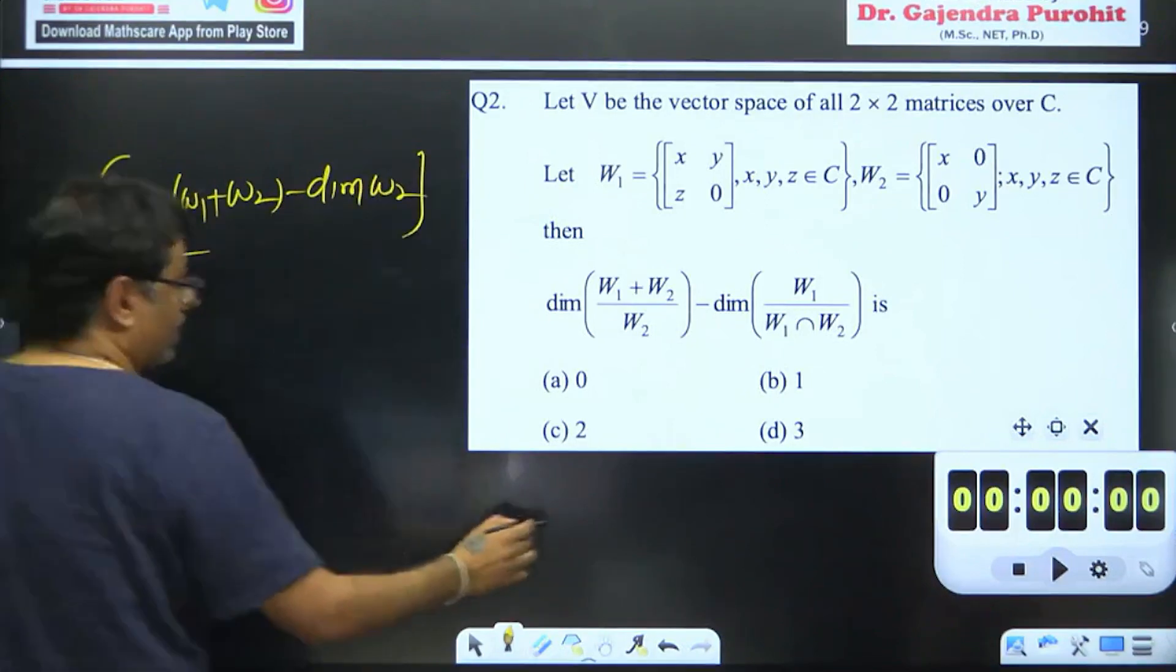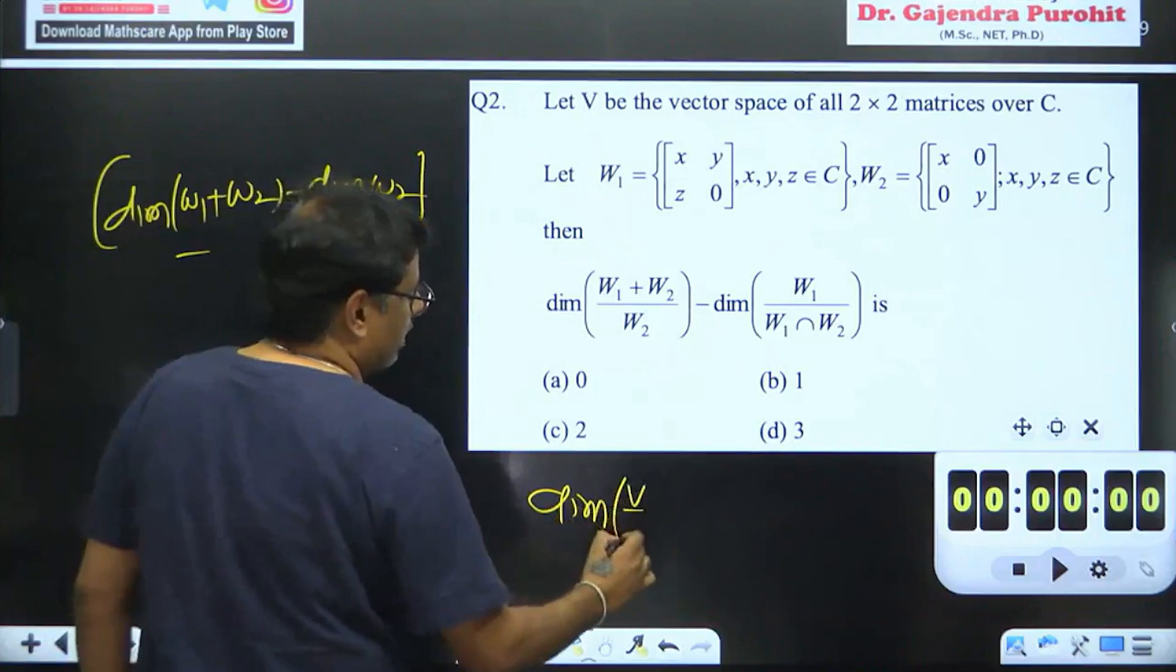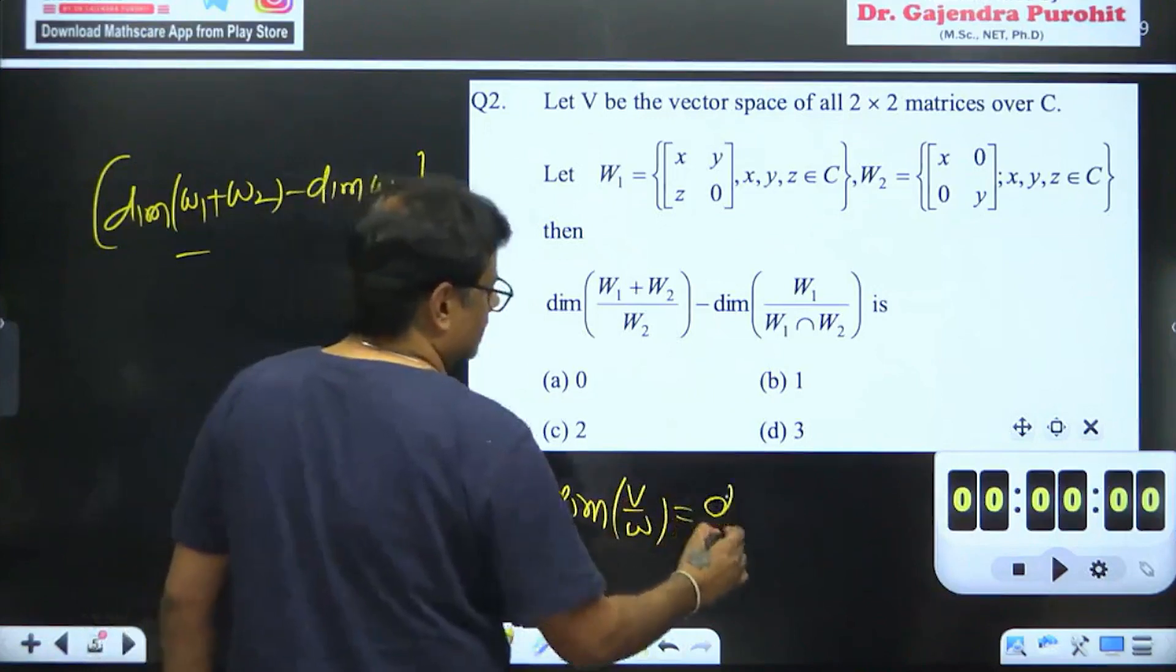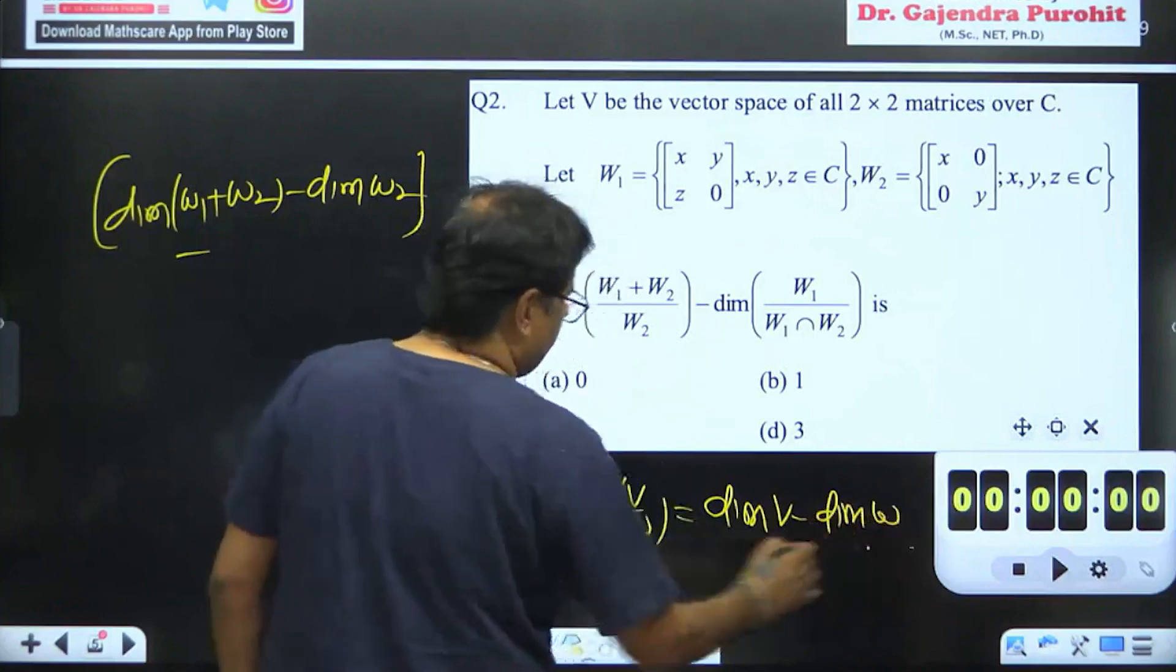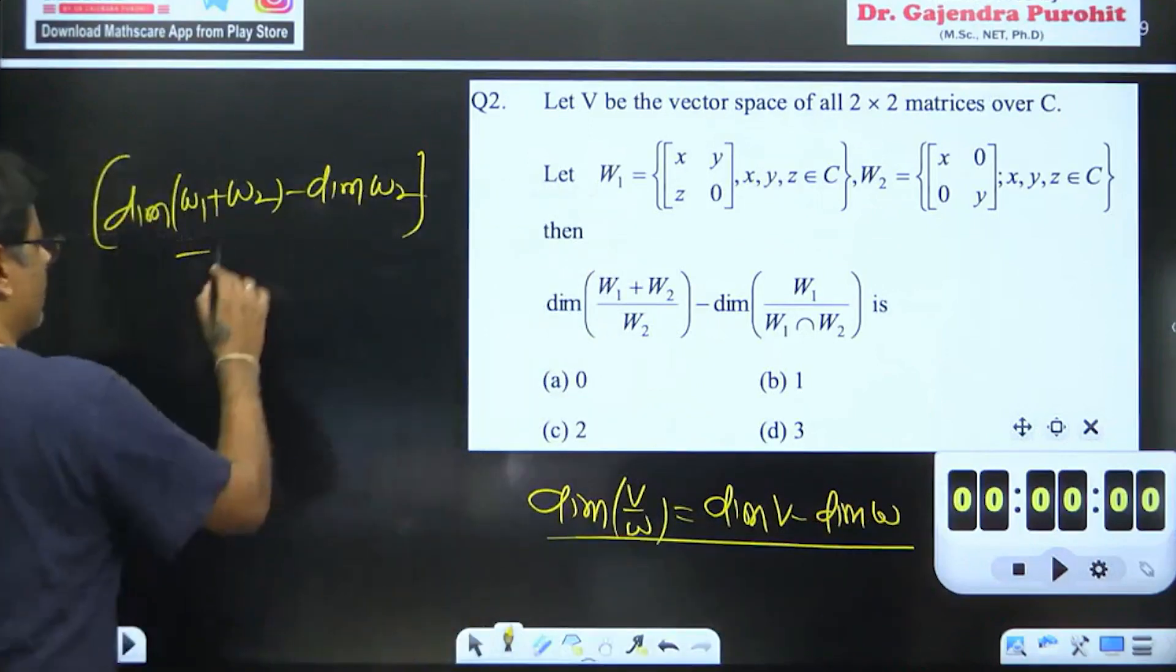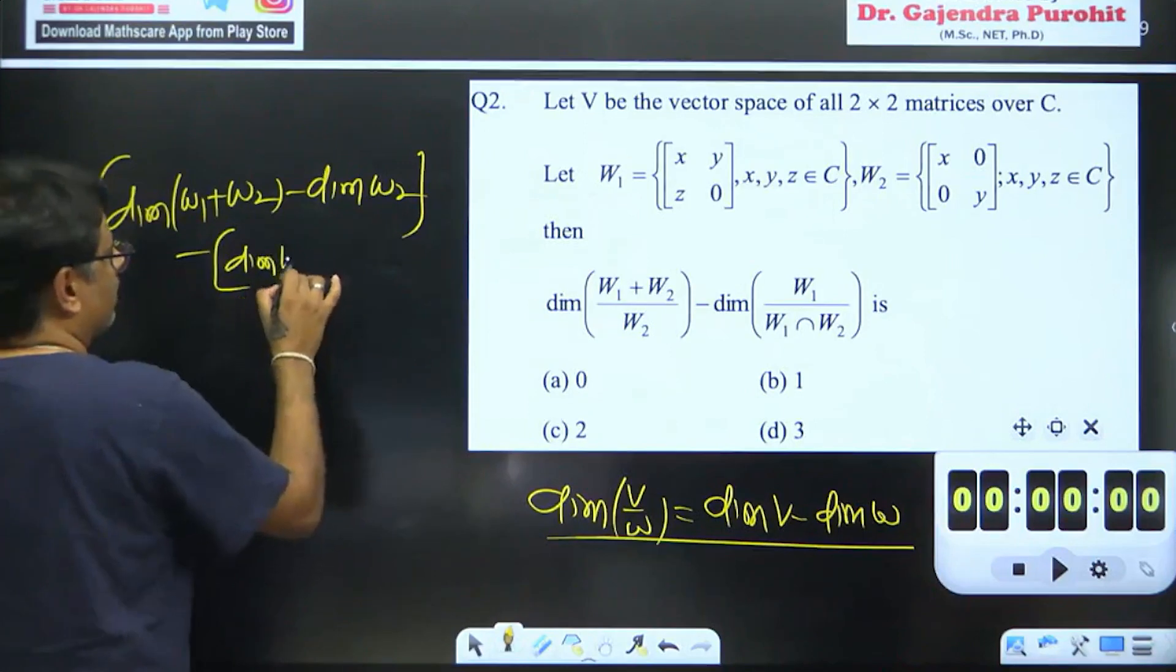If you have a dimension of v upon w, then this is a quotient space. Dimension of v minus dimension of w. This is a formula. You will open it. It is not necessary to do anything in it.